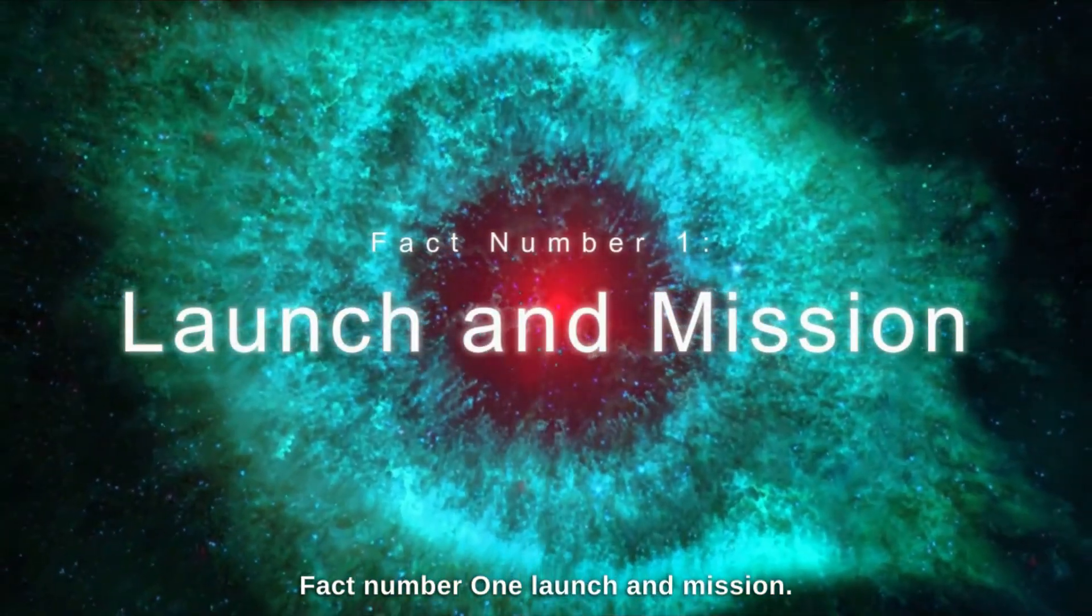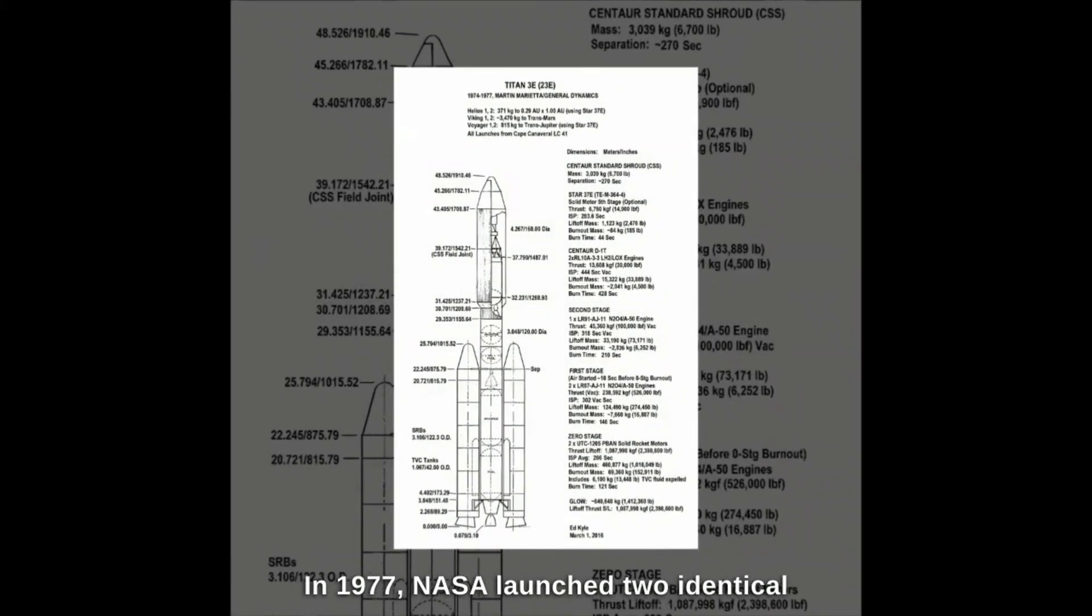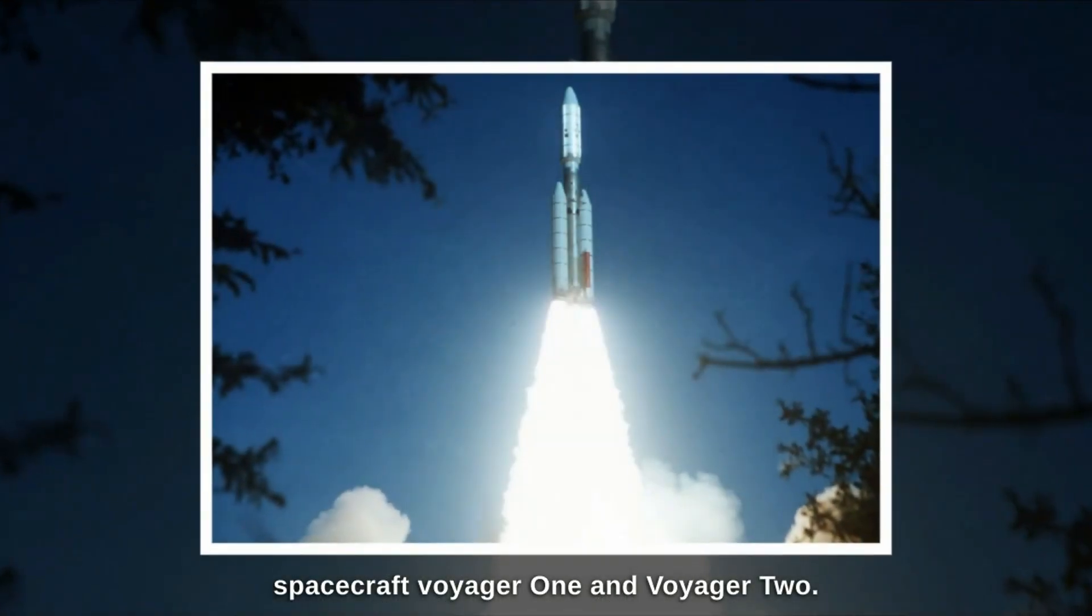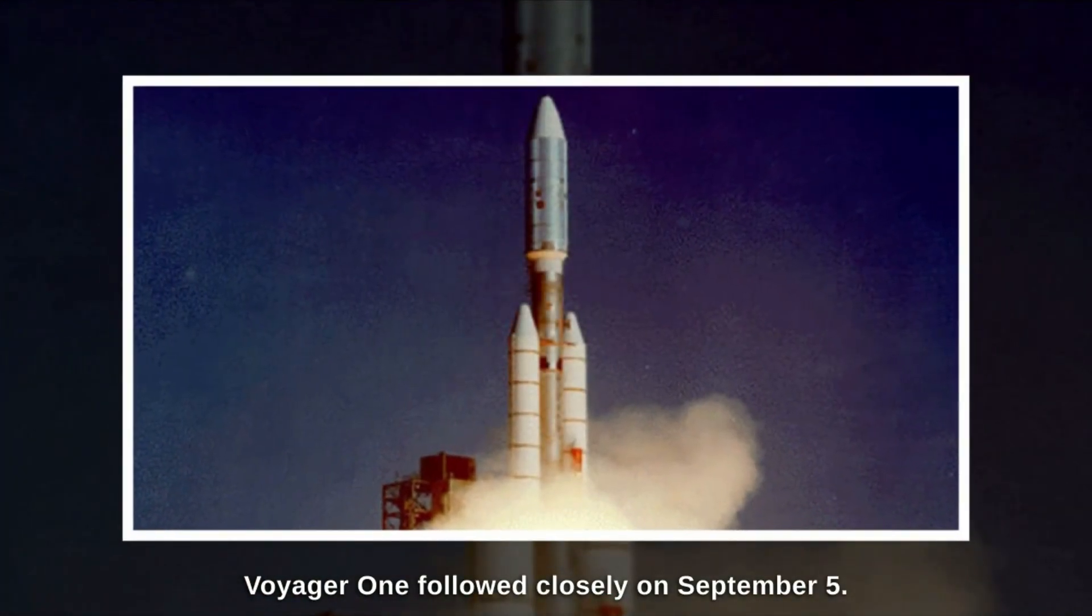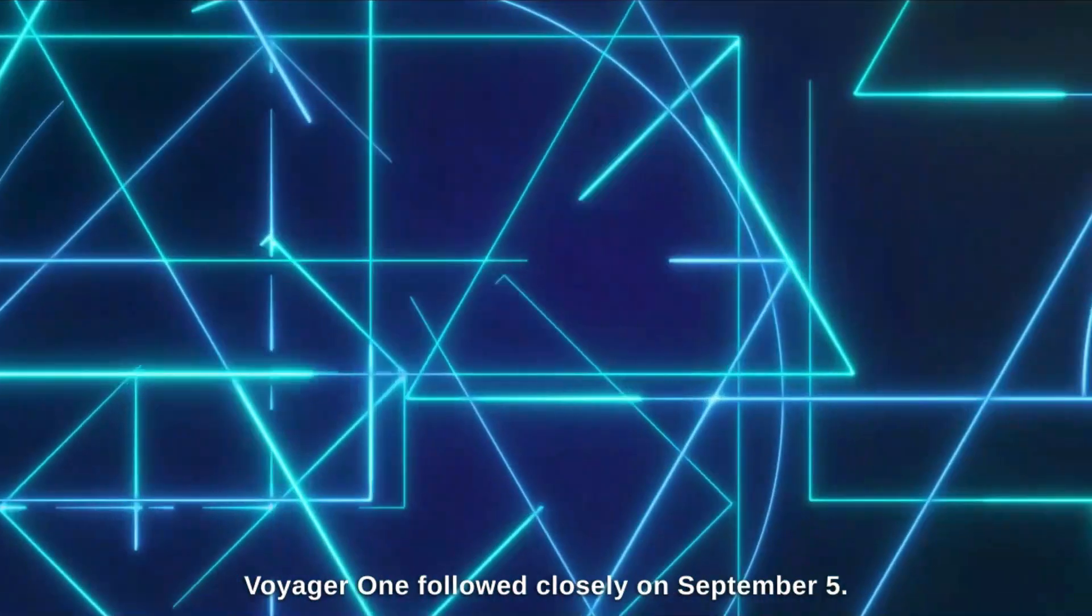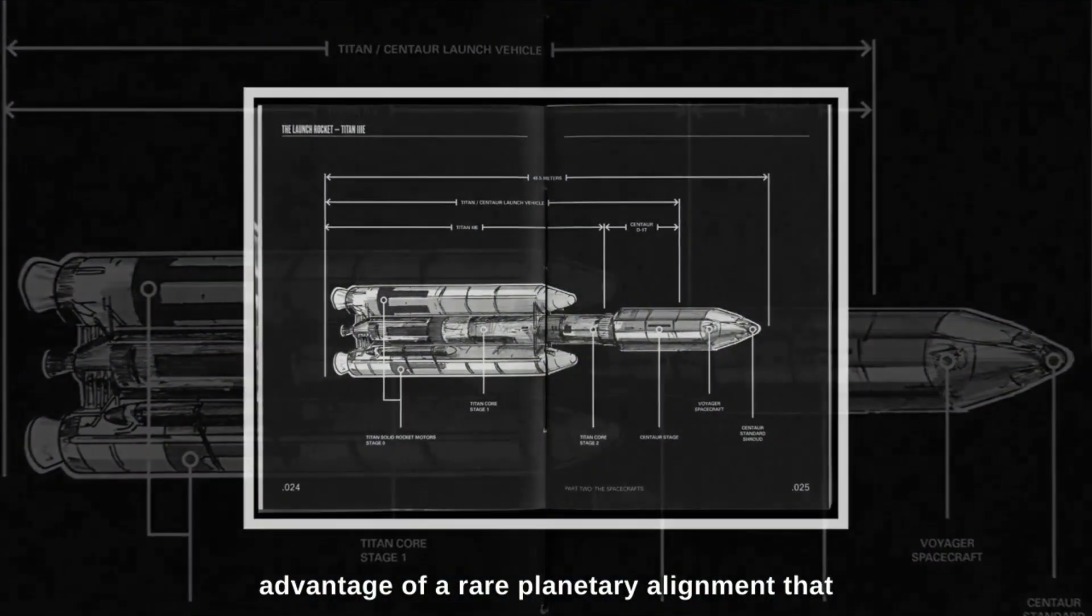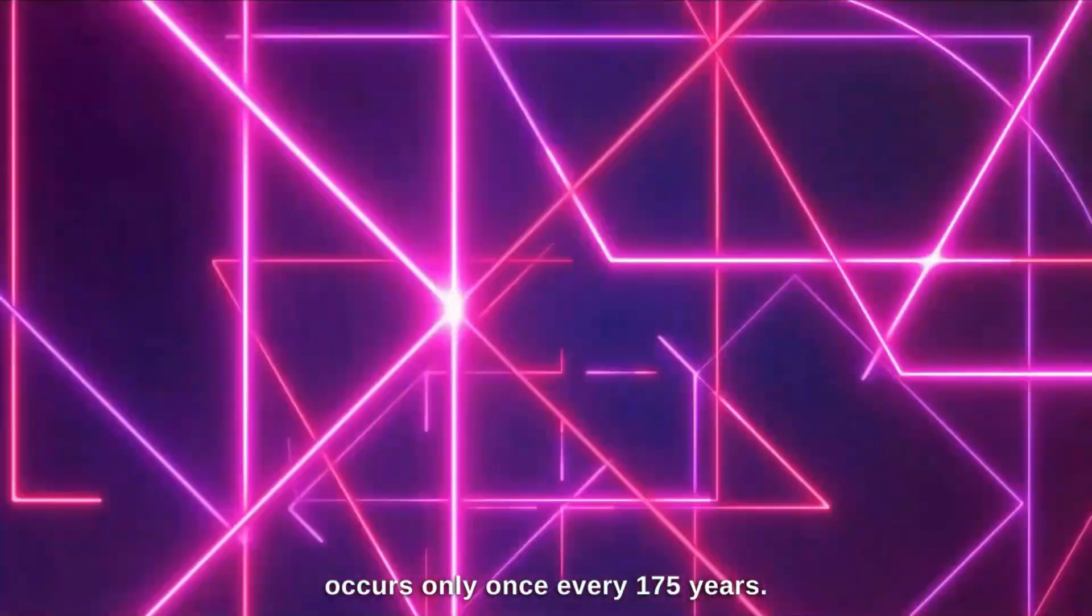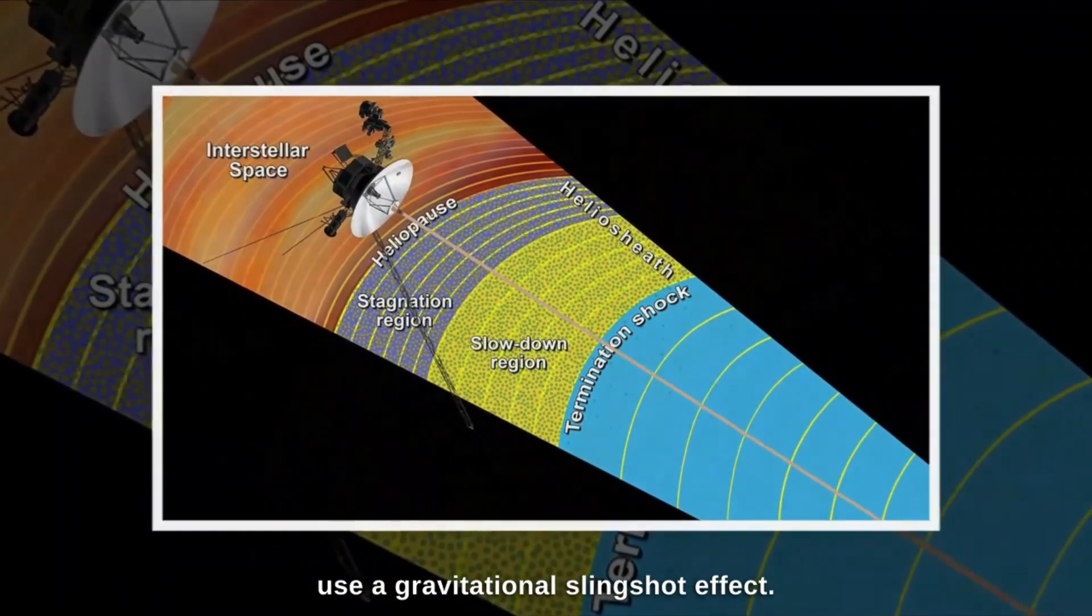Fact number 1. Launch and Mission. In 1977, NASA launched two identical spacecraft, Voyager 1 and Voyager 2. Voyager 2 took off on August 20, while Voyager 1 followed closely on September 5. These launches were perfectly timed to take advantage of a rare planetary alignment that occurs only once every 175 years. This alignment allowed the spacecraft to use a gravitational slingshot effect, a grand tour of the outer planets.